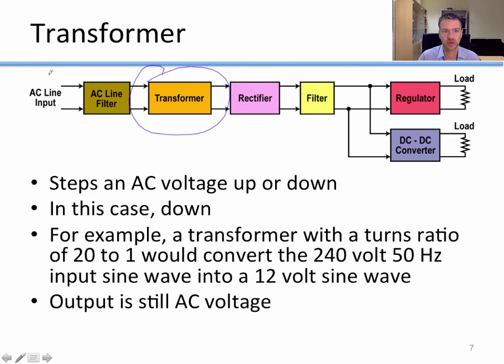A transformer is a very simple device that steps an AC voltage either up or down. In this case we're going to step it down. If we're dealing with 240 volts on the input and we want 12 volts on the output, we need a 20 to 1 turn ratio in our transformer. But from a transformer we still have AC on the output. The transformer steps down the voltage but doesn't make it DC.